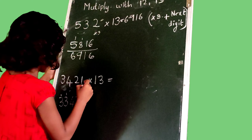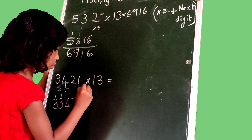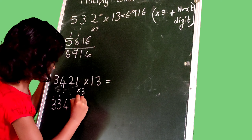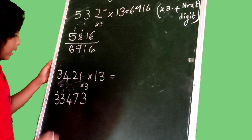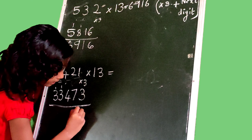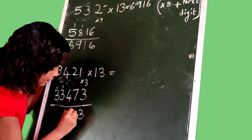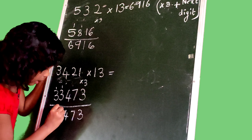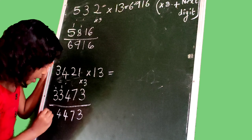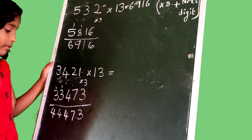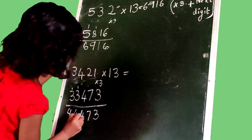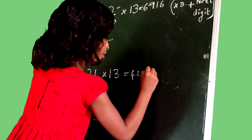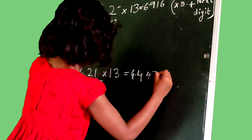Then 1, we multiply with 3: 1 times 3 is 3. Then 3 as this, 3. 7 as this, 7. 4 as this, 4. 3 plus 1 carry is 4. And 3 plus 1 carry is 4. Friends, the answer is 44,473.